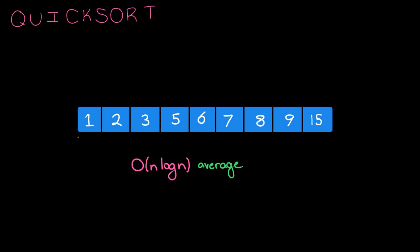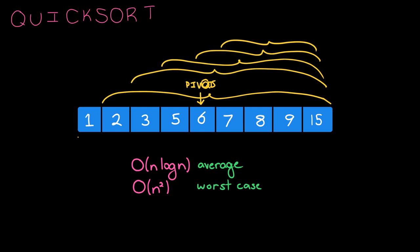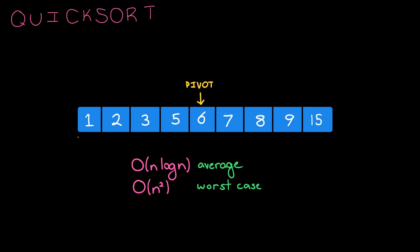However, in the bad case, imagine what happens if we pick a really bad pivot — like every time we pick the pivot element, it happens to be the very lowest element in that subarray. Then we actually have n squared calls to quicksort, and therefore our runtime degenerates to O(n²). But as long as we're smart about how we pick the pivot element, we can get a pretty efficient runtime, and that's why we typically implement quicksort in the real world.